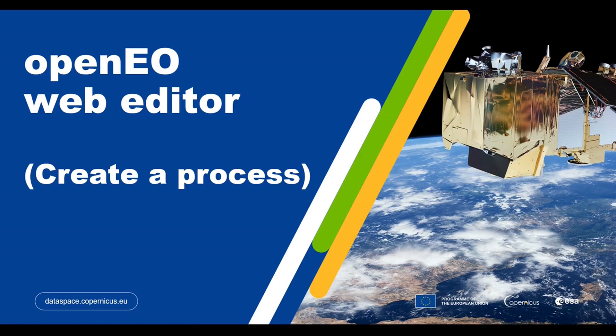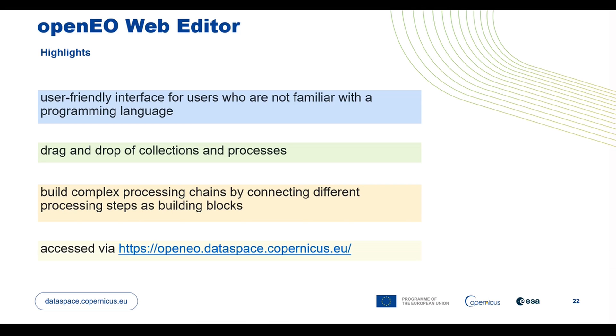Hi and welcome to this video tutorial. Here we will together develop a simple process to download an RGB image in the OpenEO Web Editor. Before continuing, we assume that you have already watched the introductory video on the OpenEO Web Editor or have a basic understanding about its features. Moreover, we would like to highlight a few points about the Web Editor before moving forward with the main tutorial content.